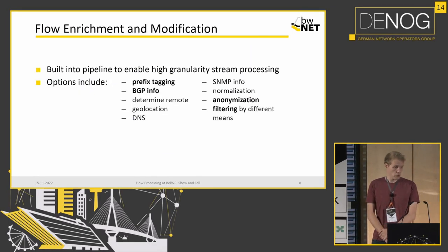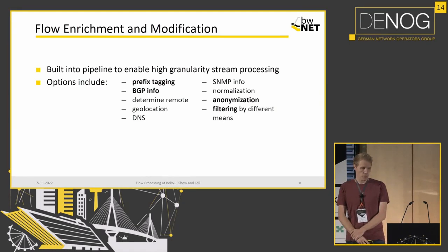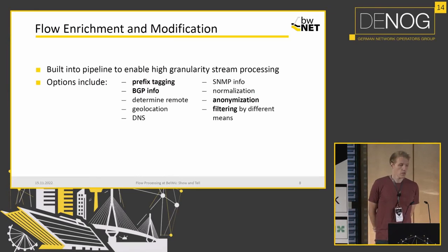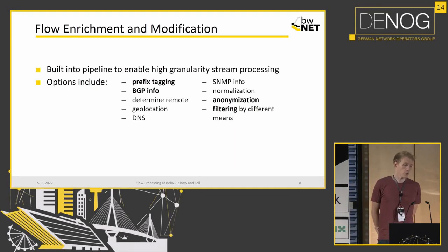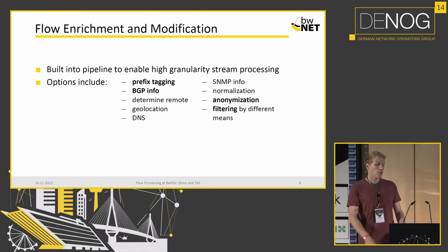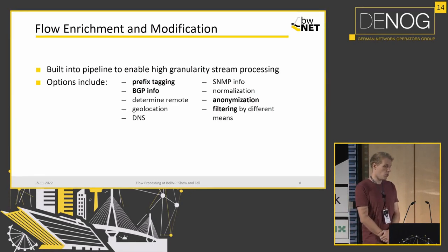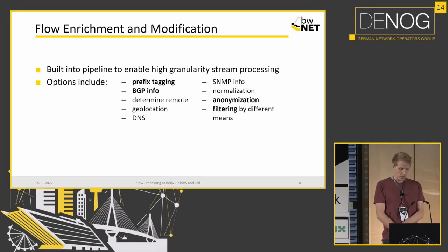We've built enrichments into the pipeline so we can filter on all these data points. The prefix tagging we used adds a customer ID to a flow based on the prefix the flow originated or terminated in. We can also add BGP data, and later we'll see something about anonymization and filtering. We can use DNS to enrich flows, SNMP, and all the other things you can think up.